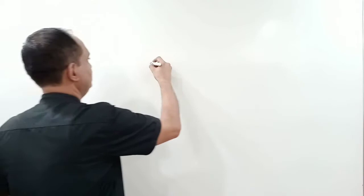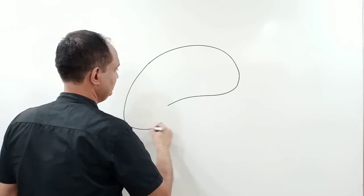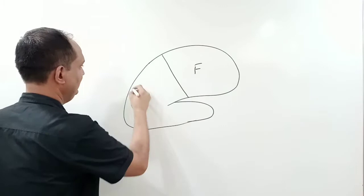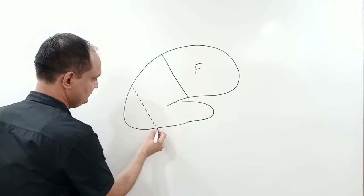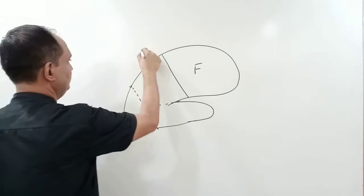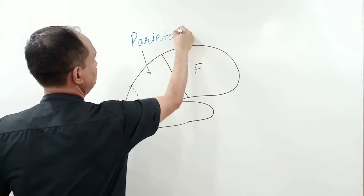Today we will discuss the functional areas of the parietal lobe. On the outer surface of the cerebrum you will see the central sulcus. The area in front is the frontal lobe. Drawing an imaginary line from the pre-occipital notch to the parietal occipital sulcus, and a horizontal line from the lateral sulcus, the area enclosed is known as the parietal lobe.